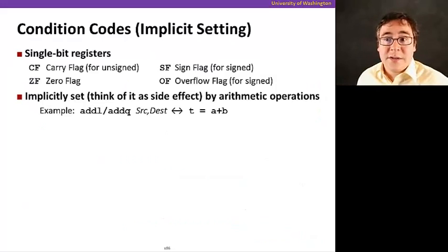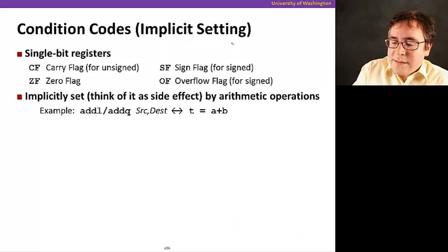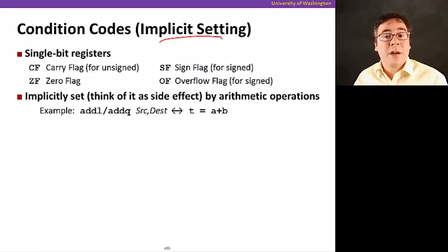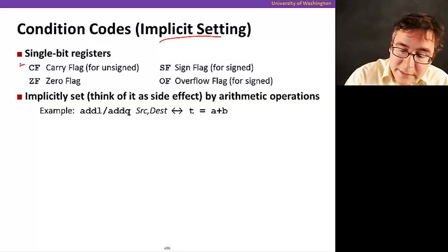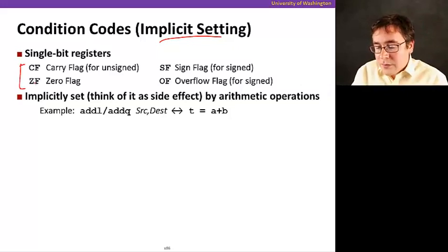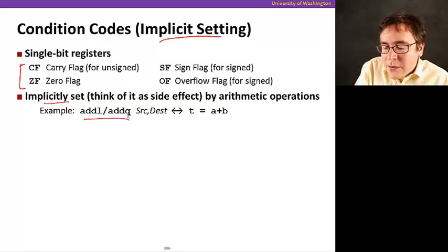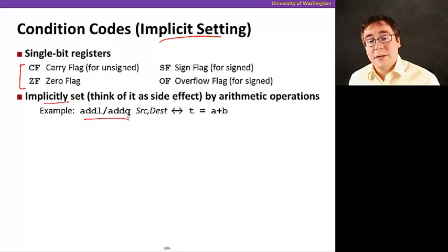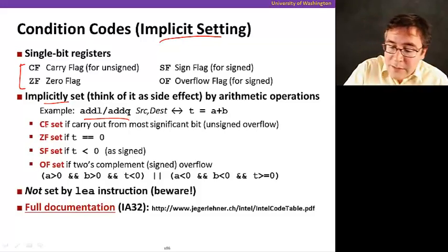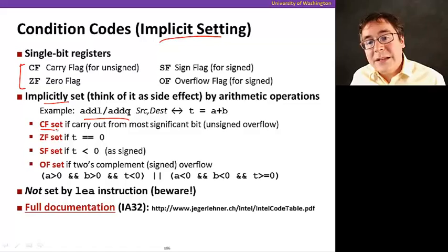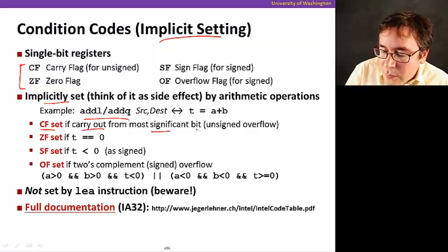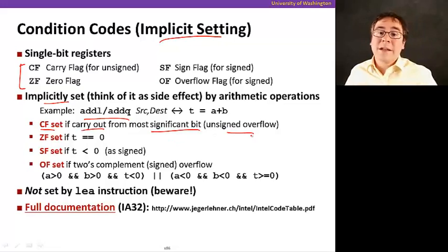Let's see how these condition codes are set. The first way is implicit setting, which happens implicitly when you carry out some operations. For example, the addl instruction performs arithmetic addition and also sets some condition codes depending on the result. The CF is set if there's a carry out from the most significant bit, which is an unsigned overflow. The ZF condition is set if the result equals zero.